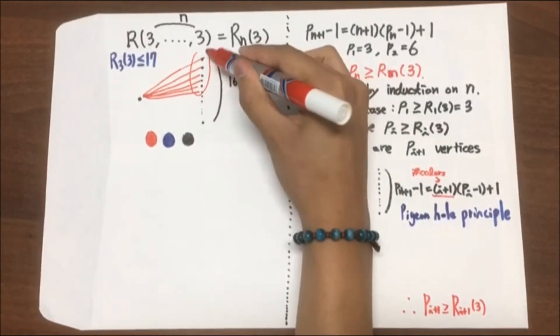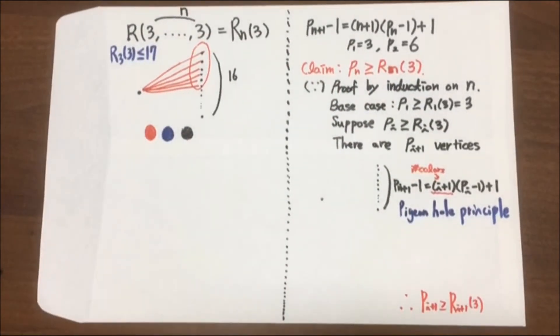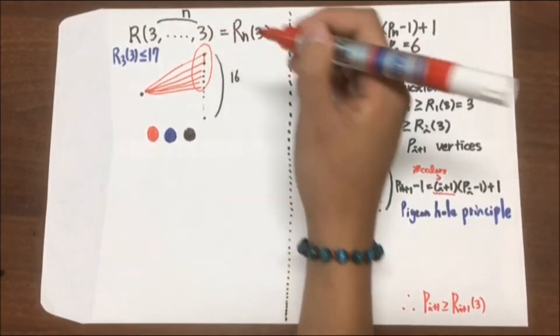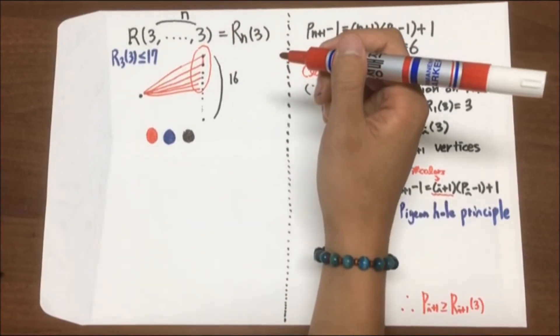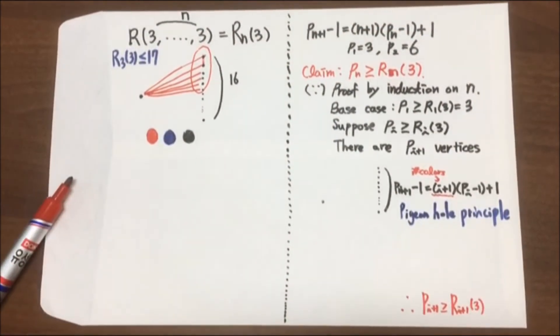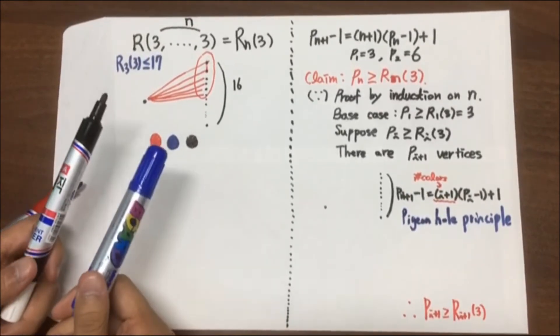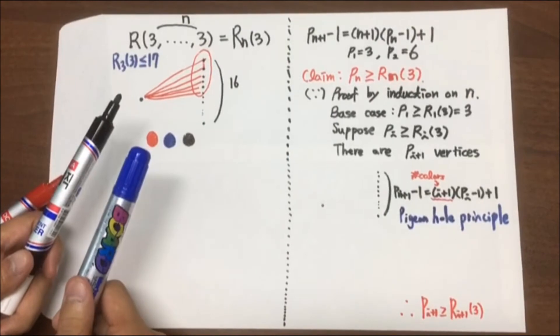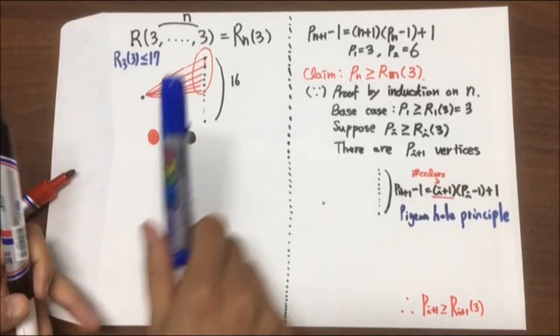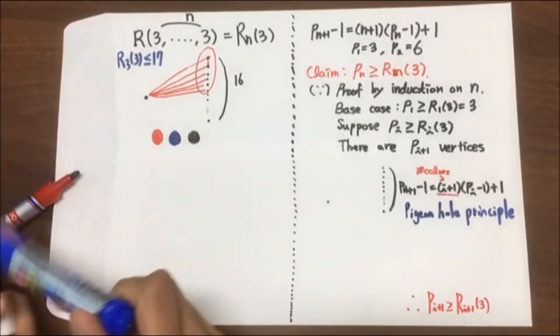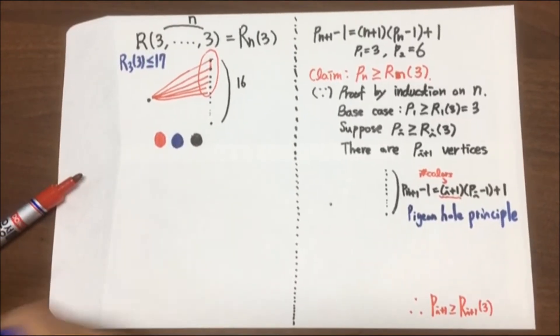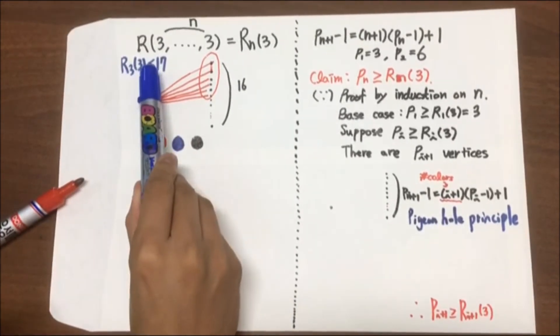Within these 6 vertices, if we use red to connect any 2, we win. Therefore, we have to use the other 2 colors, blue or black. But since R_2(3) is 6, there is a monochromatic K_3 in here. Therefore, R_3(3) is less than or equal to 17.